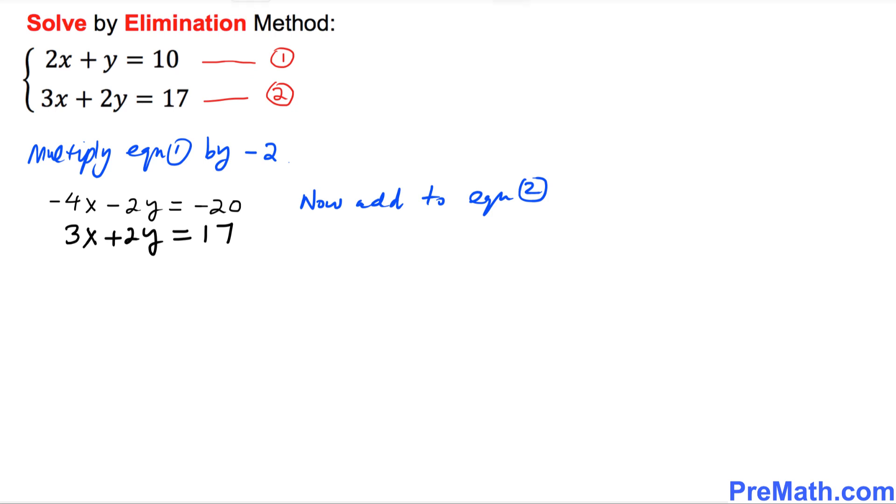We are going to add them up. If you add these, this positive 2y and negative 2y cancel out. So that is going to give us negative x equals negative 3.